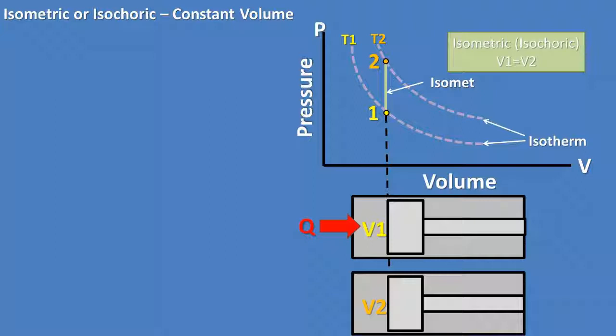This isomet symbolizes all changes in pressure and temperature in the isometric process. Notice that the isomet has no change in volume throughout the process. The volume remains constant.